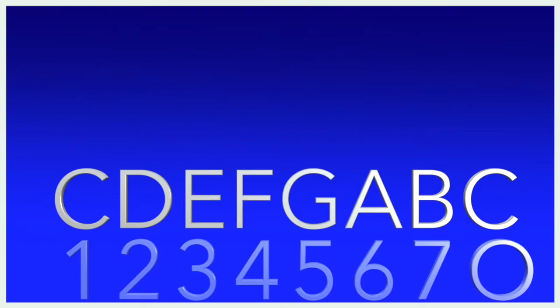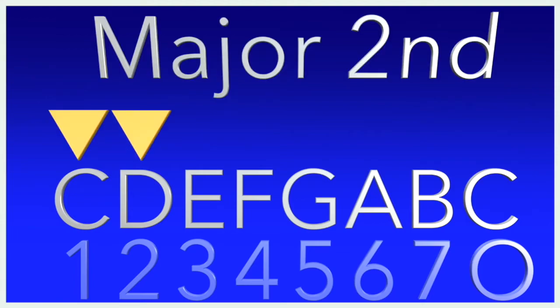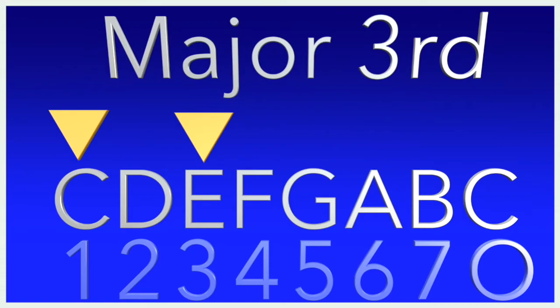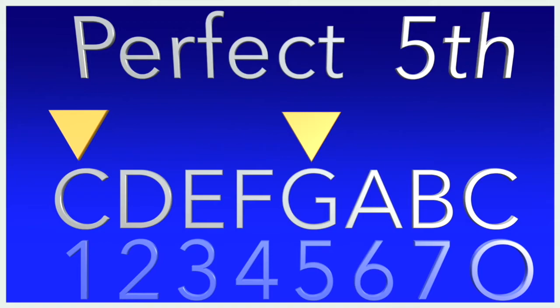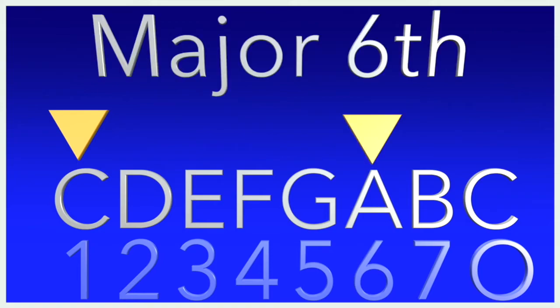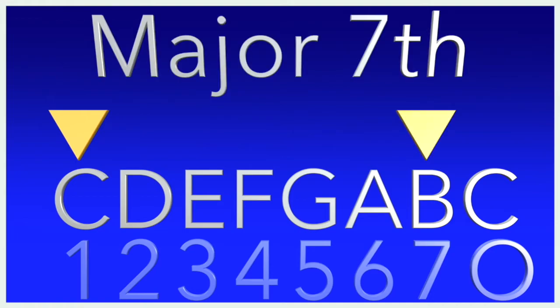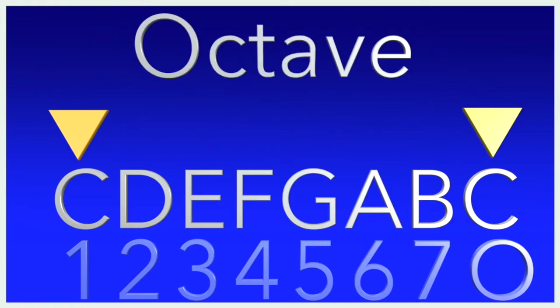So as we look through the major scale, the important thing to remember is that we're starting from C every time. From C to D is a major second, from C to E is a major third, from C to F is a perfect fourth, from C to G is a major fifth, from C to A is a major sixth, from C to B is a major seventh, and from C to C is an octave.